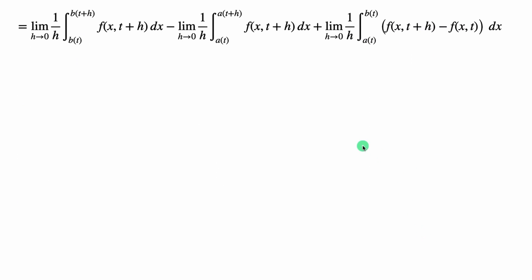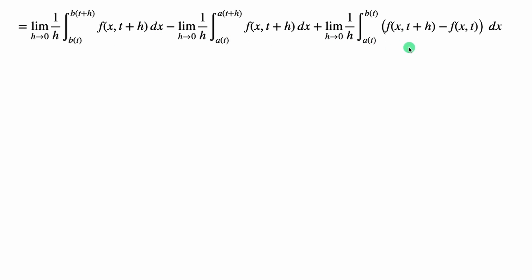Now we have three terms to deal with. The first two terms are basically the same — one has b in the limits and the other has a, so they'll be dealt with in the same way. The third one is a different beast on its own. So let's deal with the first one.